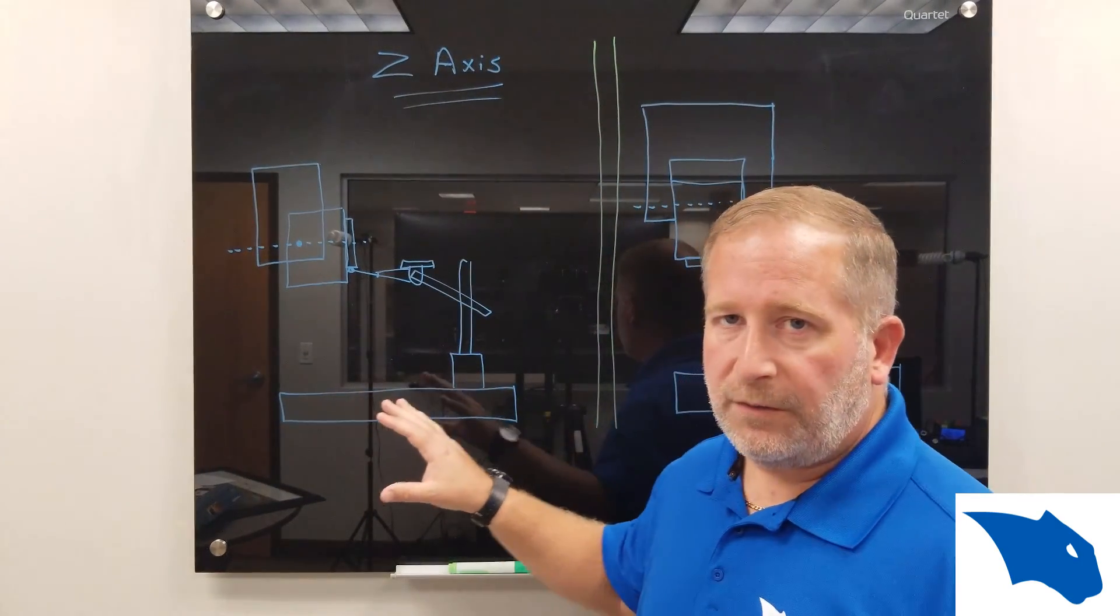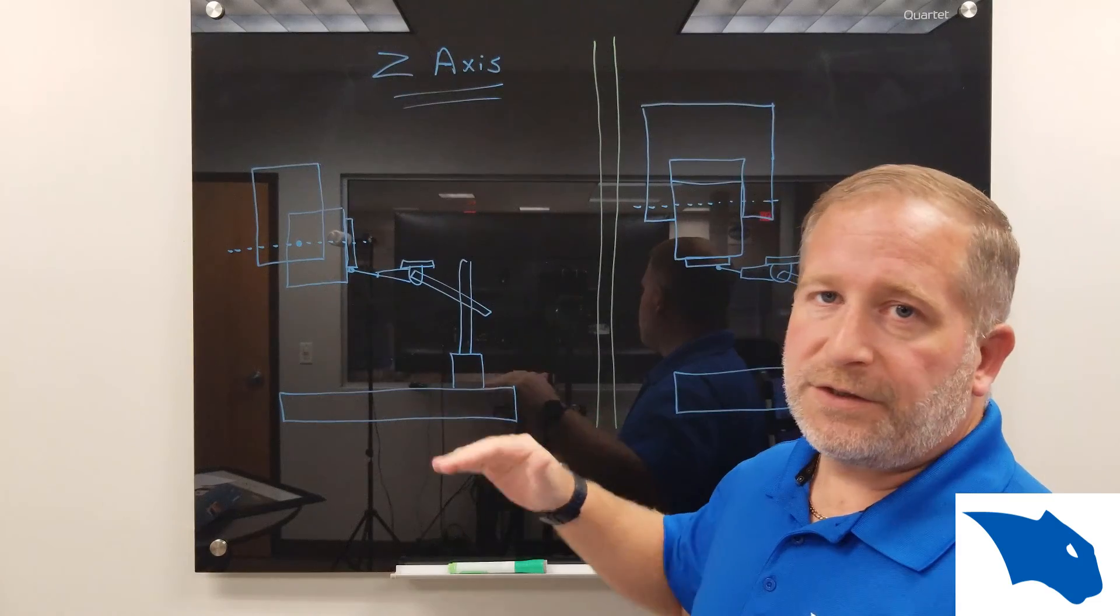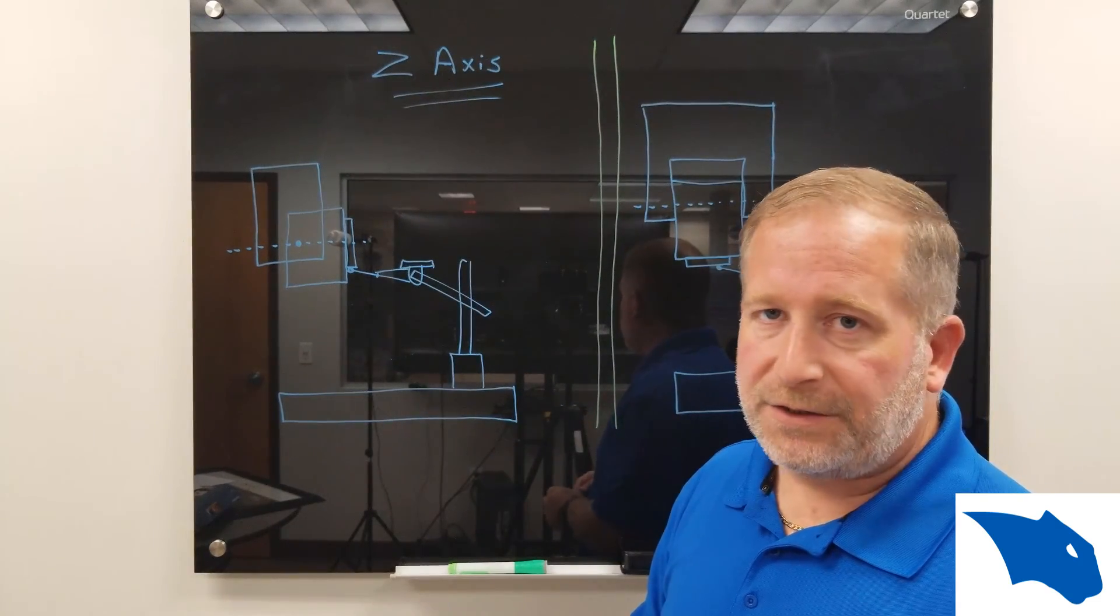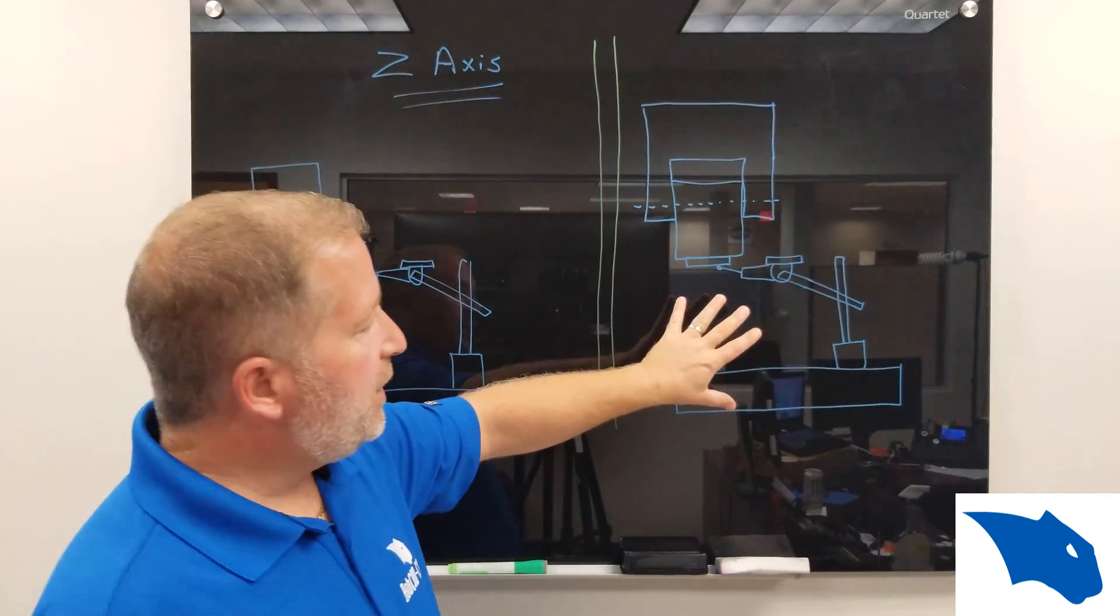So what I have drawn here is the diagrams that we're going to use for finding the center of rotation on the z-axis. What we're going to want to do, this is a front view of a machine,